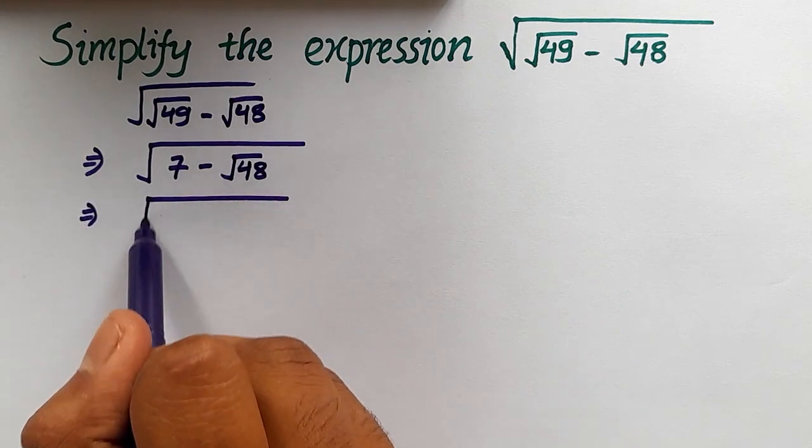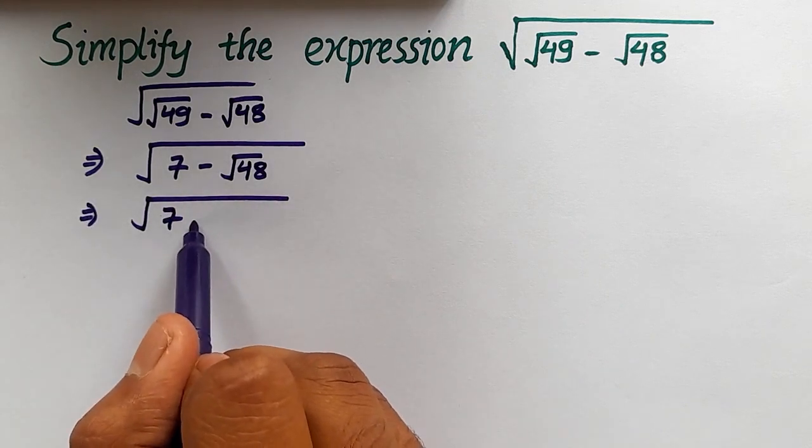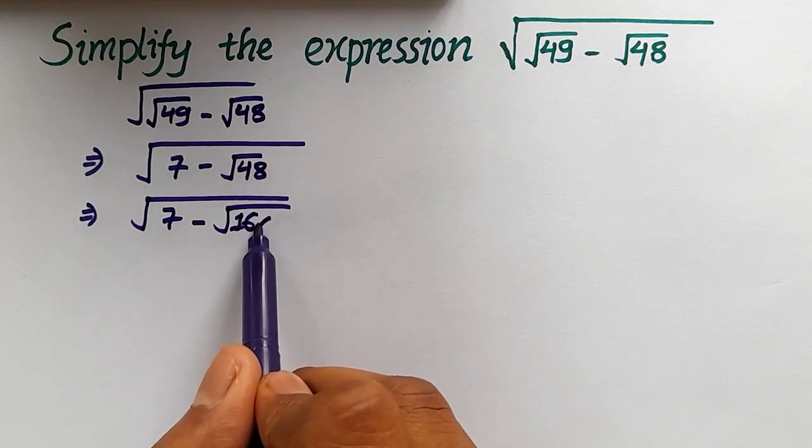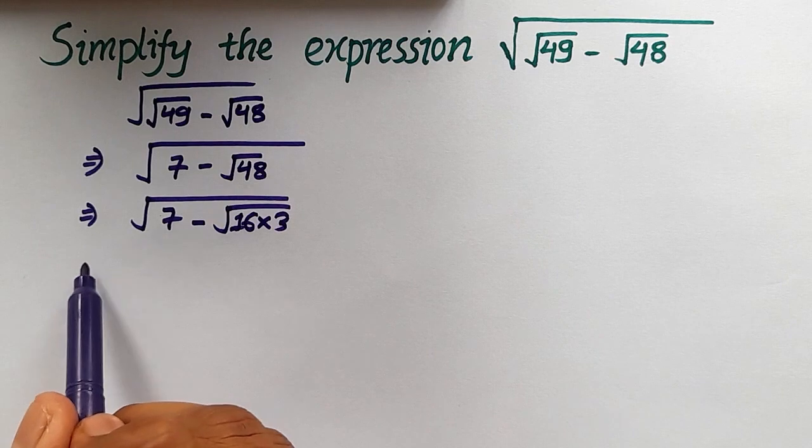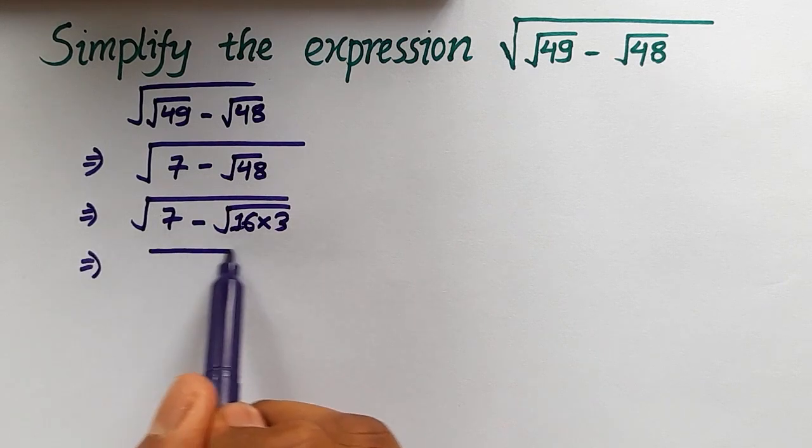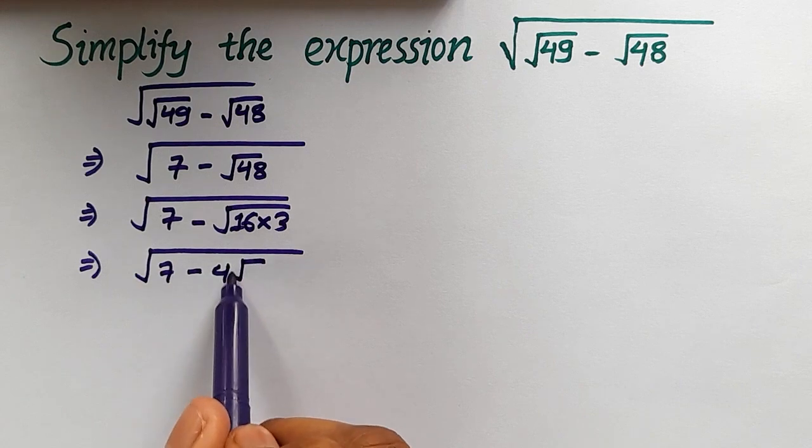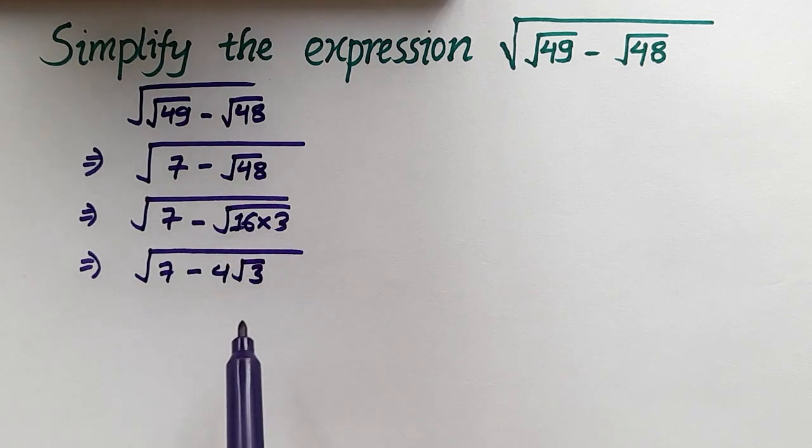This can be written as √(7 - √(16×3)) because 16×3 equals 48. We can simplify to √(7 - 4√3) since 16 is the square of 4.